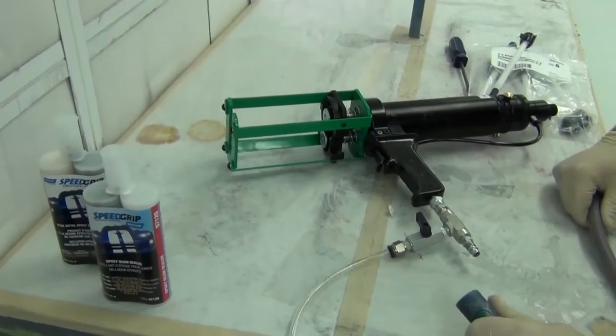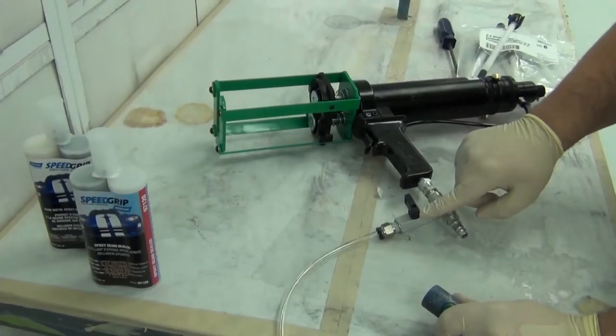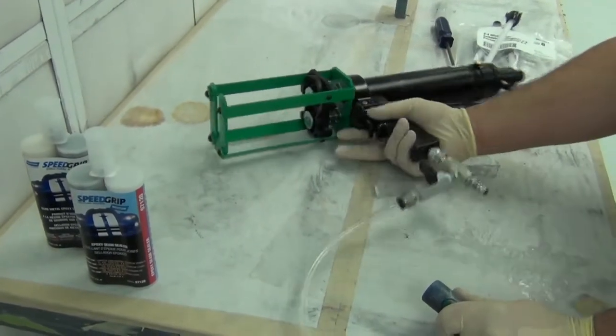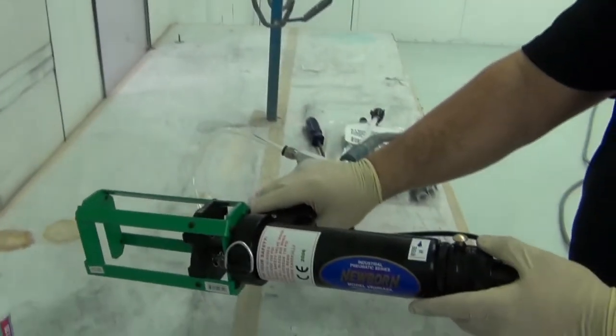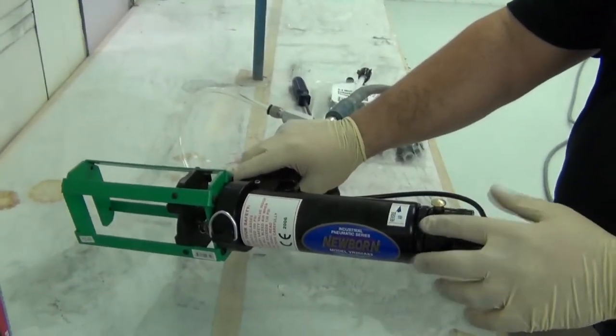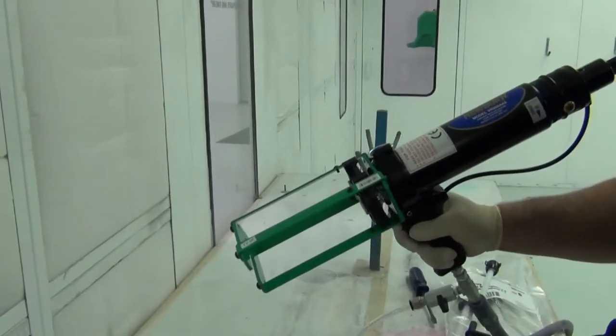The first step will be to attach the air line to the gun. Before we do so, though, we'll want to make sure that the valve is in the off position, which is the vertical position. So we'll hook up the air line to the gun. We'll also want to make sure the button on the pneumatic gun is pointing toward reverse air. So when we pull the trigger, the plungers will go back.